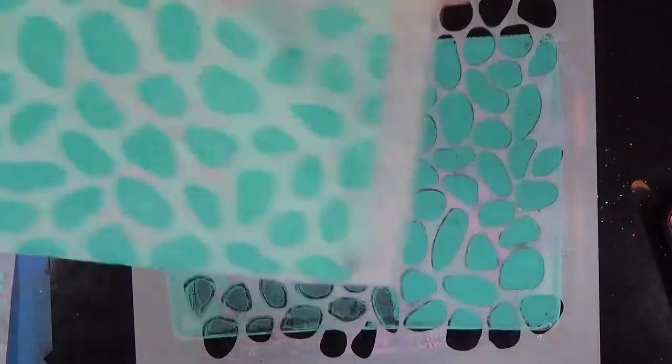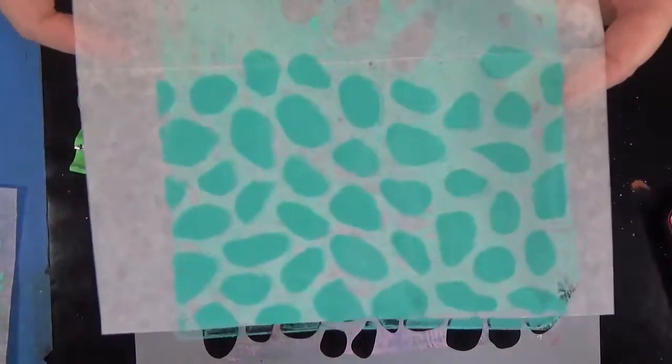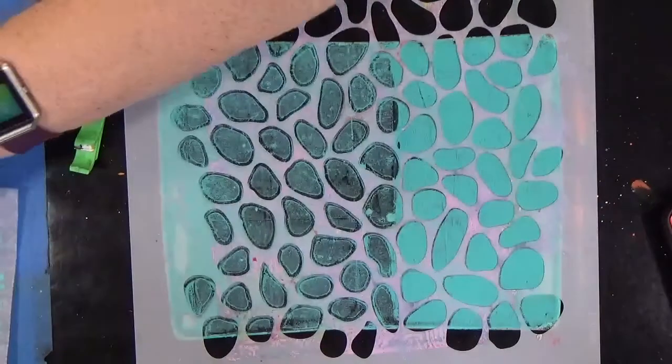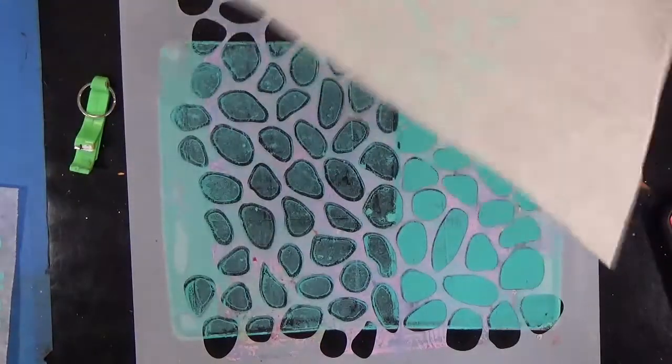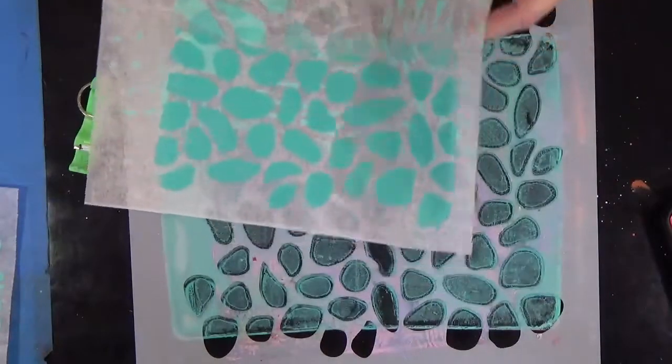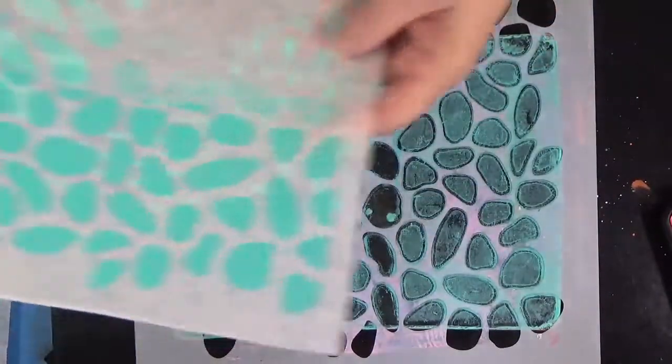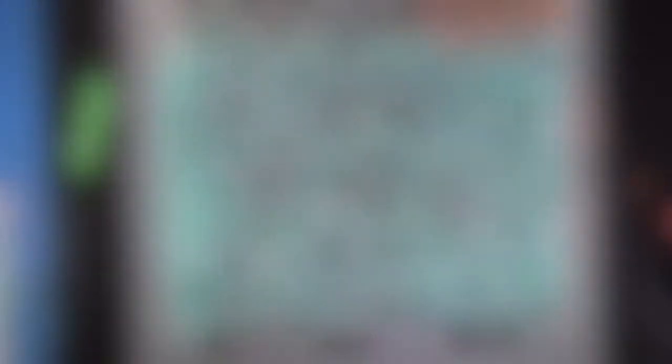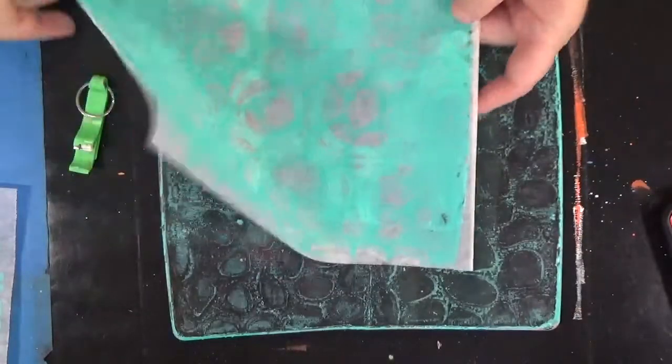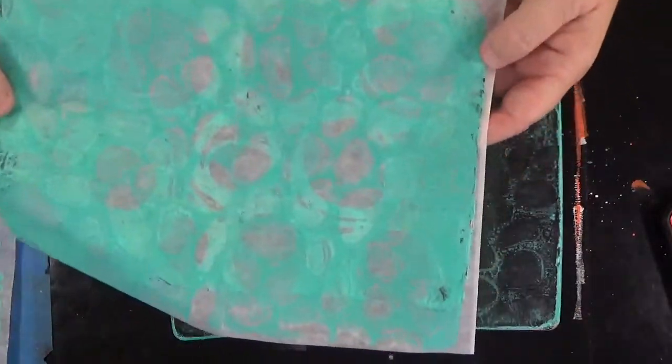I am simply showing you how to layer similar colors one on top of the other to develop all the layers that make a great print. You can see that I'm using this stencil, which is actually a Donna Downey stencil which is no longer available. It was called boulders.